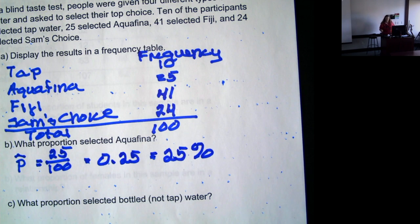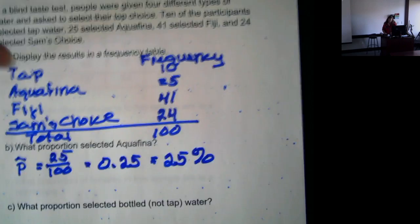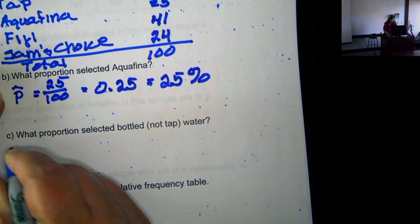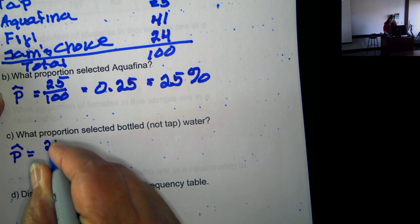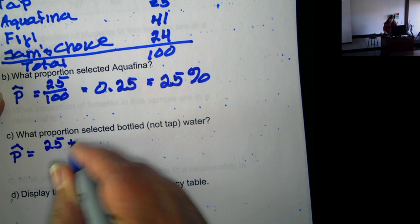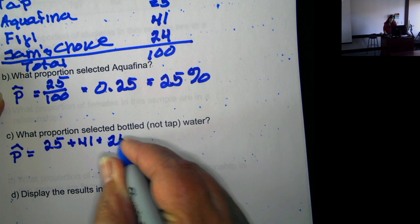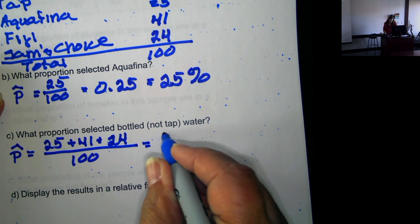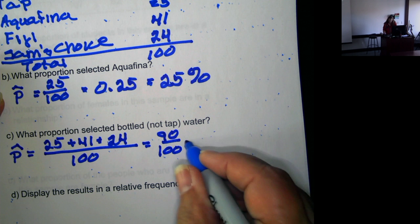Either decimal or percent would be the preferred ways of writing the answer. Now we want what proportion selected bottled, not tap water. So 25 selected Aquafina, 41 selected Fiji, 24 Sam's choice over the 100, gives us 90 over 100.